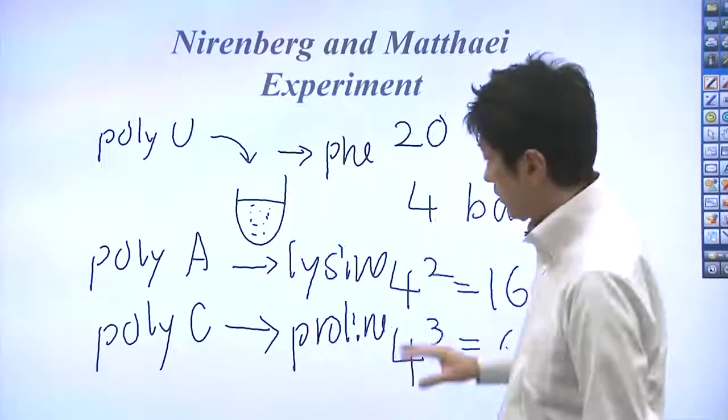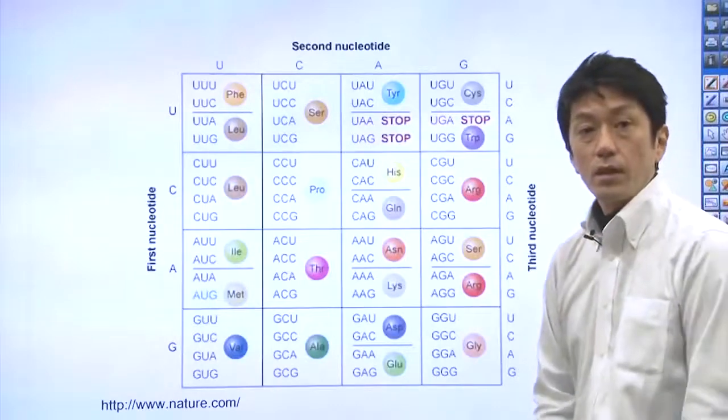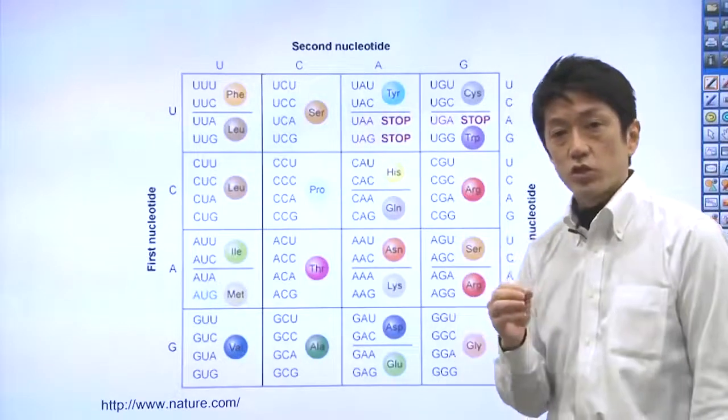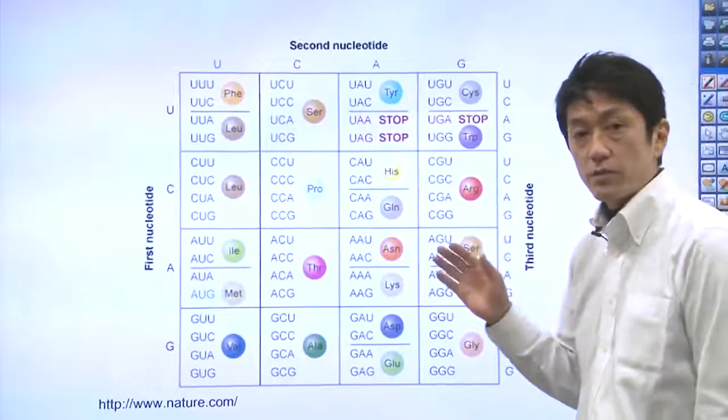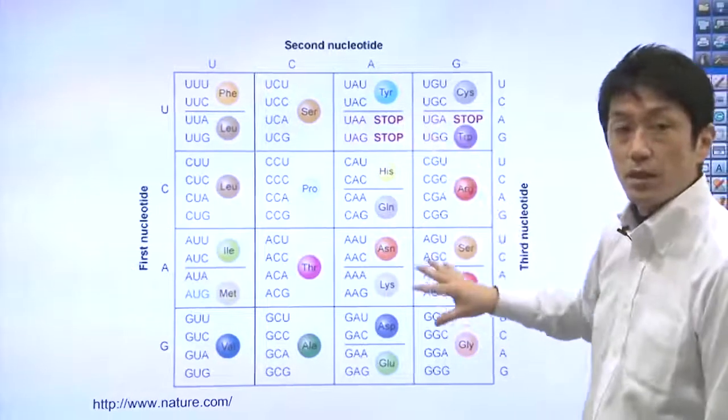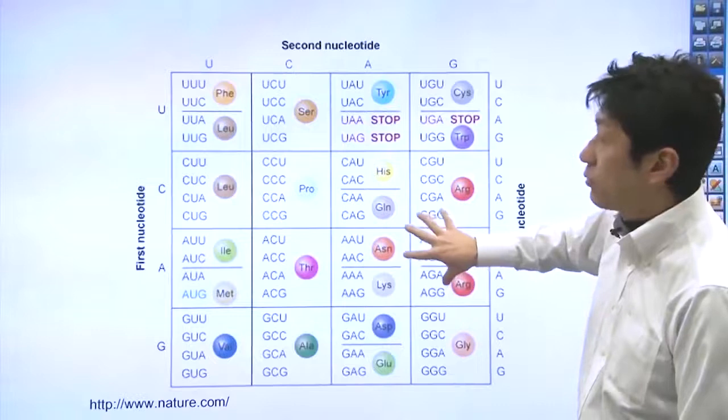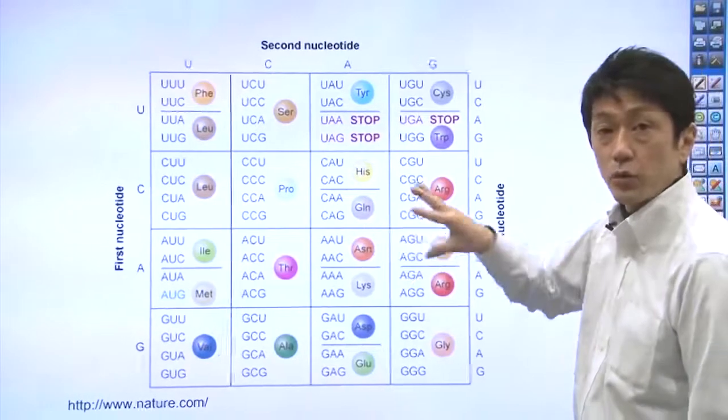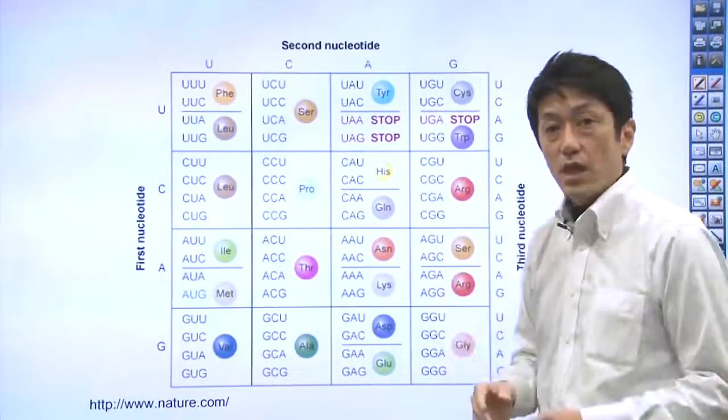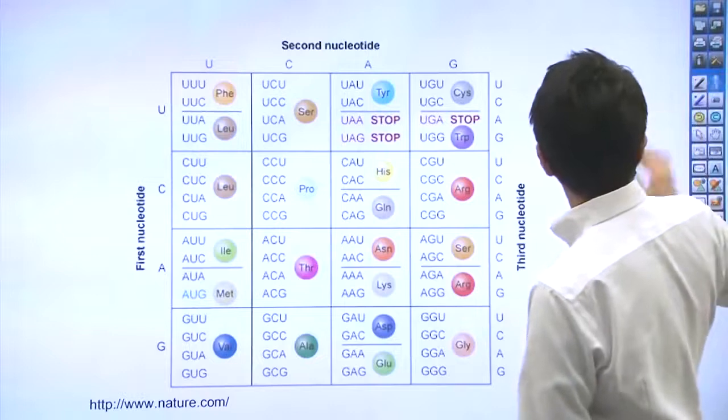Here is a genetic code table. The table shows the relationships between the 3 letter sequences of RNA and amino acids. The production of proteins starts with the sequence AUG.